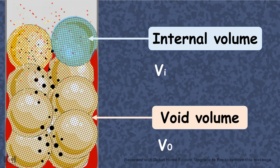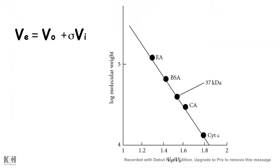So the volume which is inside the bead is actually known as the internal volume or VI, whereas the void volume means the volume which is occupied by the interspace between the beads, which is known as V0. Now void volume and the internal volume are actually related to the elution volume by this equation.